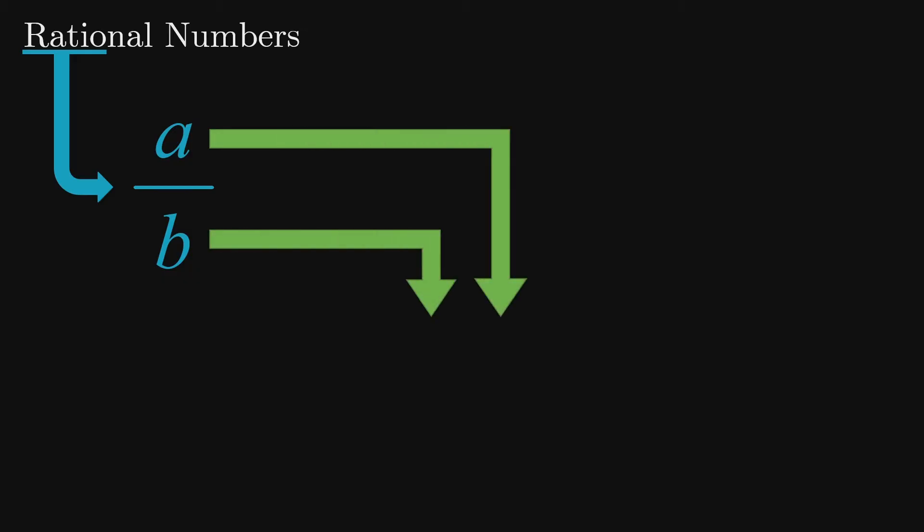To begin our journey let's look at what it means for a number to be rational. In order for a number to be considered rational it only has to meet one simple requirement. We have to be able to write it as a fraction where both the numerator and denominator are integers.